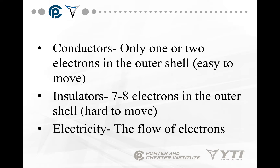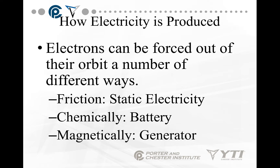Electricity, which we're going to spend a great deal of time talking about, is the flow of electrons. Electrons can be forced out of their orbit in a number of ways — in other words, how electricity is produced.